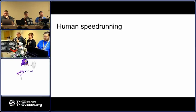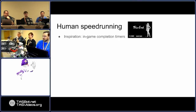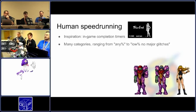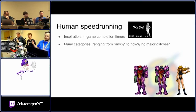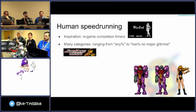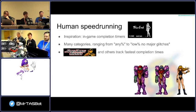Human speedrunning has been around for a while. The inspiration was in-game completion timers. Metroid was a classic example — depending on how fast you completed the game, you'd end up with different graphics at the end. Sometimes people started speedrunning to get to the end as fast as they could, generally any percent. But sometimes you do some pretty crazy things like low percent, no major glitches, or other categories. Speed Demos Archive has really been the forerunner — the established place for all speedrun records — and still is.